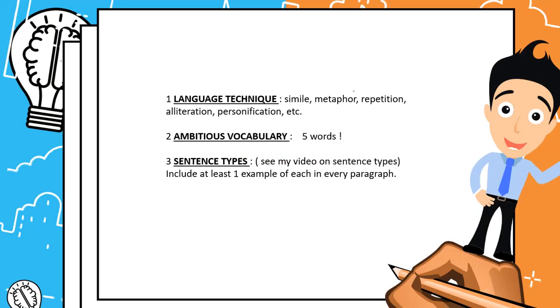Whenever you write a paragraph, you should have at least one language technique: a simile or a metaphor or repetition, alliteration, personification. There's all sorts of language techniques. Include at least one in every paragraph. Ambitious vocabulary, a hint for the ambitious vocabulary: